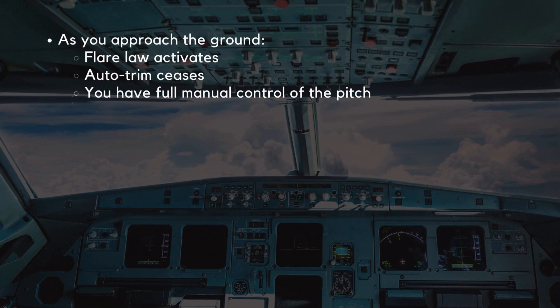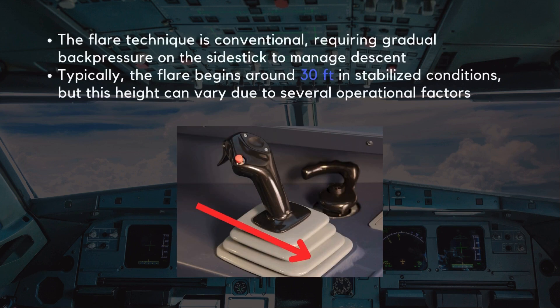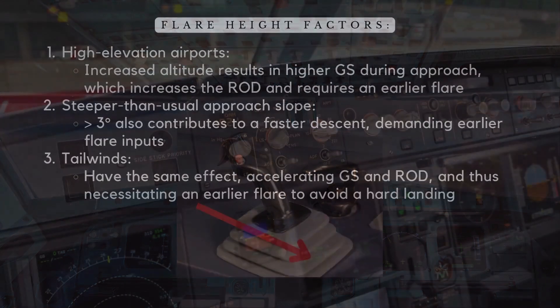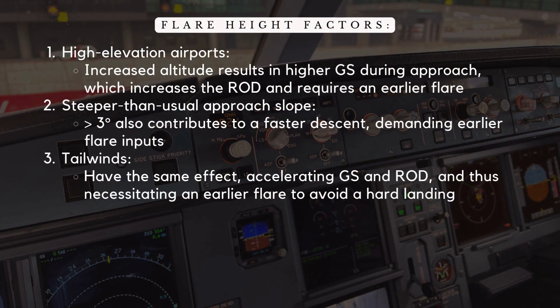As you approach the ground, the flare law activates and auto trim ceases, giving you full manual control of the pitch. The A320 flare technique is conventional, requiring gradual back pressure on the side stick to manage descent. Typically, the flare begins around 30 feet in stabilized conditions, but this height can vary. At high elevation airports, the increased altitude results in higher ground speed during approach, which increases the descent rate and requires an earlier flare.